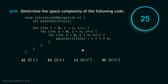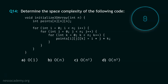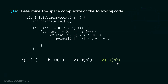This is the last question of this rapid-fire quiz, and your time starts now. Stop. The correct option is option D: O(N³). Here we have a three-dimensional array. The size of this array is N × N × N, which is N³. Hence, it will take memory equivalent to N³, and therefore the space complexity is O(N³).